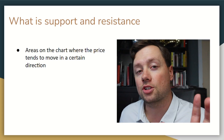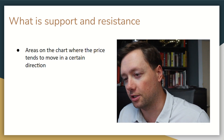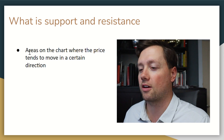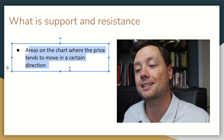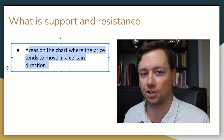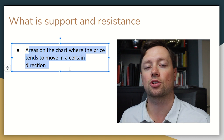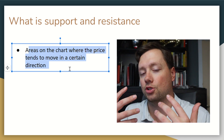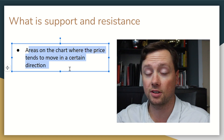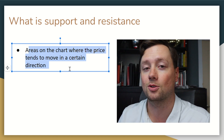First of all, let's talk about what support and resistance is and keep it real simple. Support and resistance are areas on the chart where the price tends to move in a certain direction. It is basically a pattern where we are looking for certain areas on the chart where the stock price has moved in a certain direction previously and we would expect it to do that again.